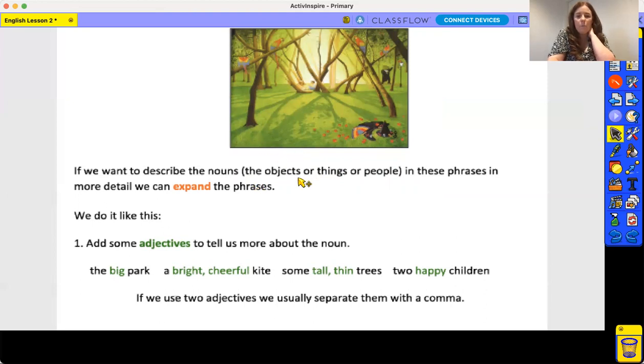If we want to describe the nouns—the person, the object, or things—we expand the phrase. And we can do this by adding an adjective to tell us a bit more about the noun. So, the big park, the huge park, the small park, different things. A bright, cheerful kite. So in this one we've used two adjectives very carefully, putting a comma in between because as we know we use a comma in a list.